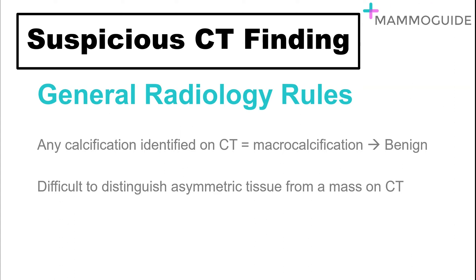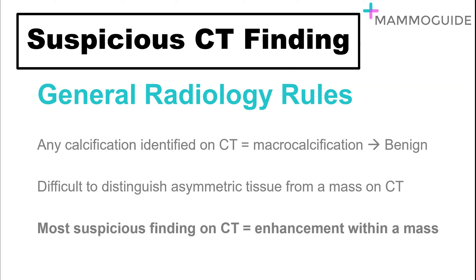Next, it is difficult to distinguish asymmetric tissue from a mass on CT. Be very hesitant about simply commenting on asymmetric tissue, as this likely is a normal variant or related to the patient's position on the CT scanner.